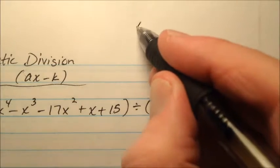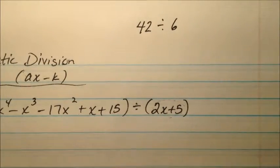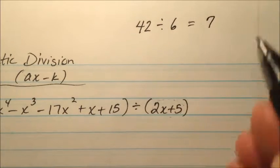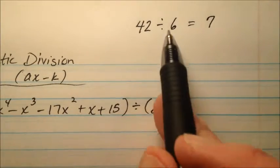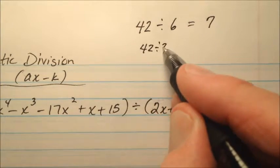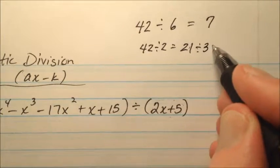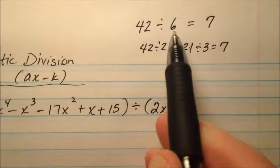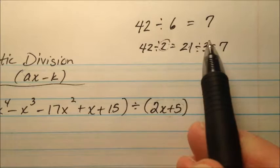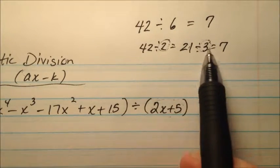If I have a number like 42 and I want to divide it by 6, I can do it straight out and just get 7. But maybe 6 is something that's hard to divide by. So maybe I can divide 42 divided by 2 first and get 21, and then divide it by 3 later to get my 7, because 6 is 2 times 3. So I can do a series of divisions to get my 7.